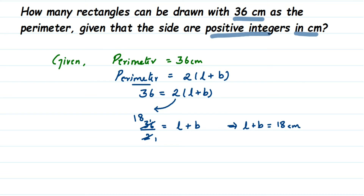So when you add length and breadth, it must equal 18 centimeters. What are the possibilities? The first number will be length and the second will be breadth. We'll start with 1: if length is 1 centimeter, then breadth should be 17 centimeters, because 1 plus 17 equals 18. So the first combination is 1 and 17.